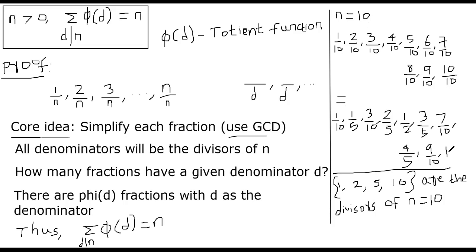So what are the divisors of 10? The divisors of 10 are 1, 2, 5 and 10. As you can see all the denominators are just the divisors of 10. Now let's focus on, for example, take d to be 5. How many fractions have 5 as the denominator? We got four fractions with the denominator 5. What is φ(5)? φ(5) is just 4, Euler's totient function.